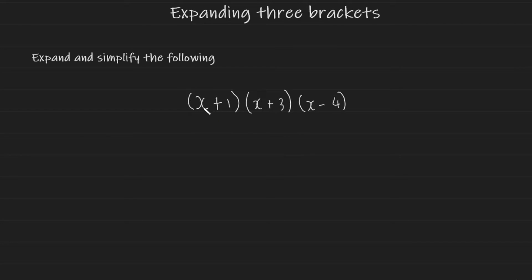I'm first going to begin by expanding the x plus 1 and the x plus 3. This is going to give us x squared plus 4x plus 3. As you can see, I've simplified the two middle terms. It was going to be plus 3x and plus x, which would give us plus 4x.